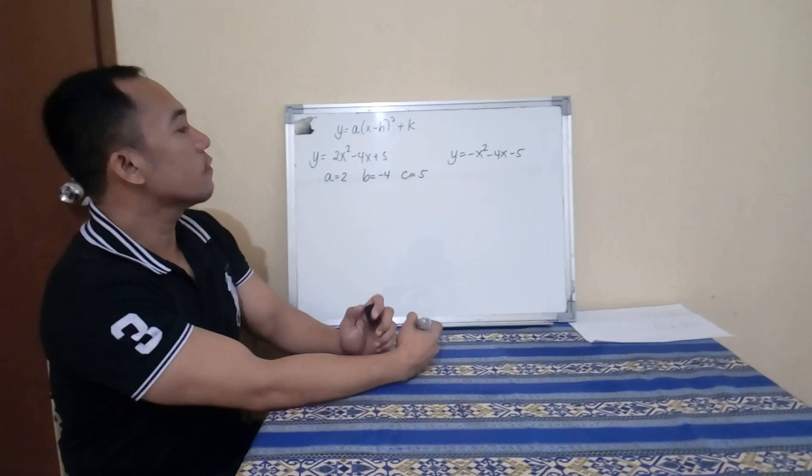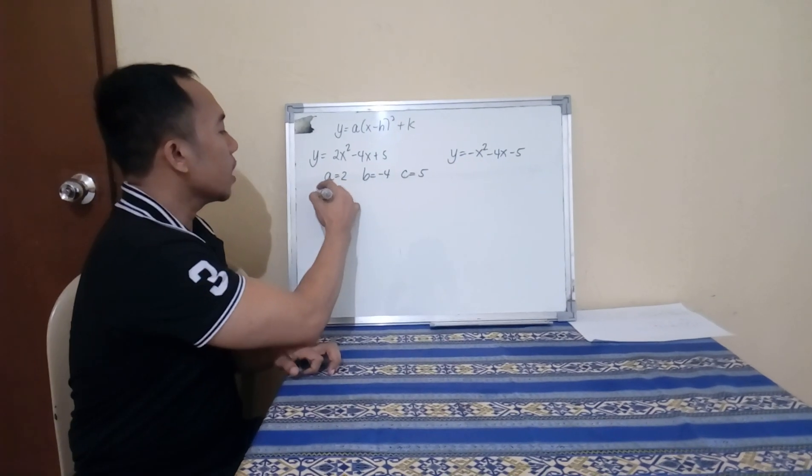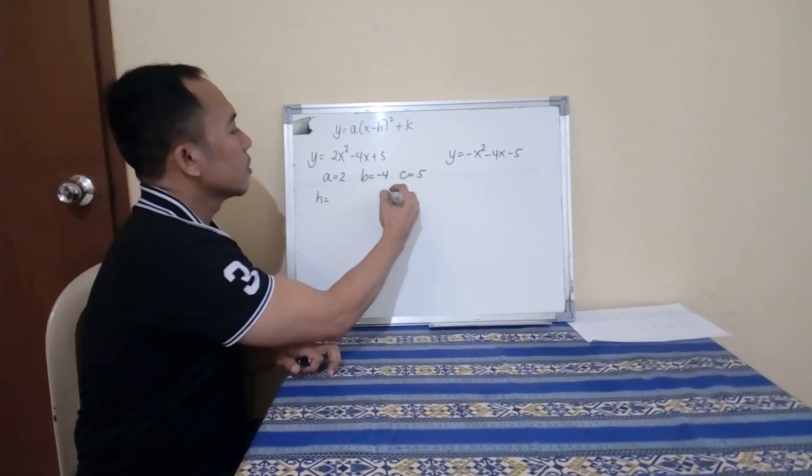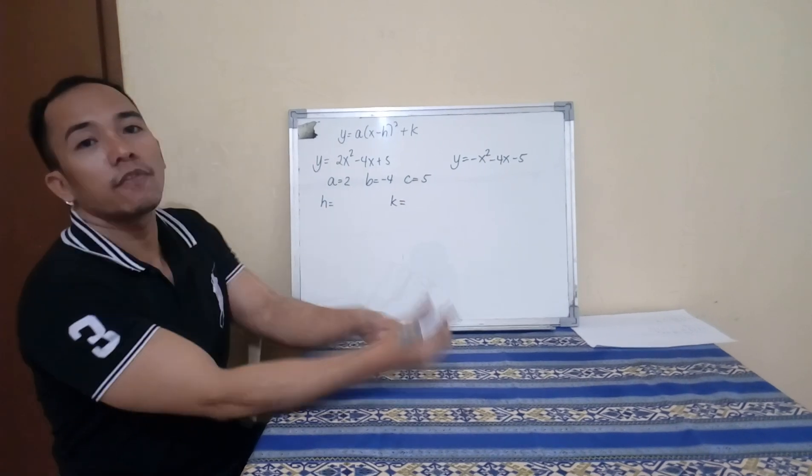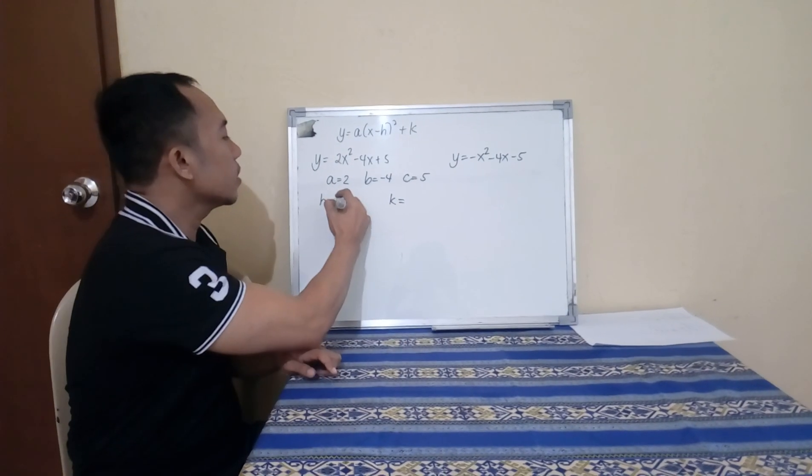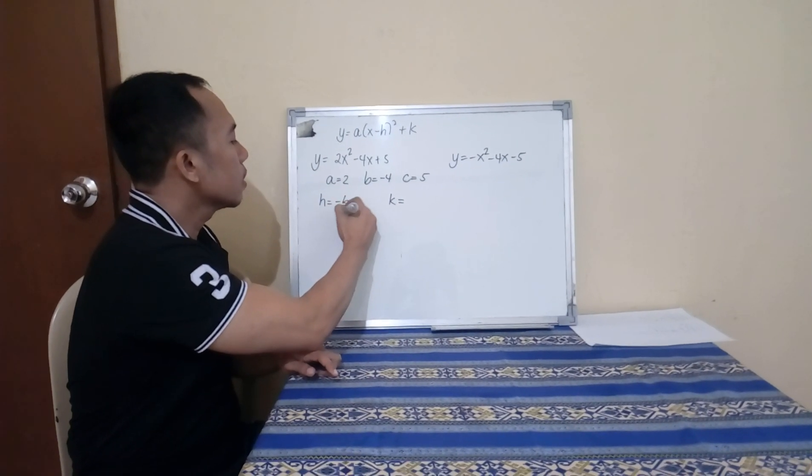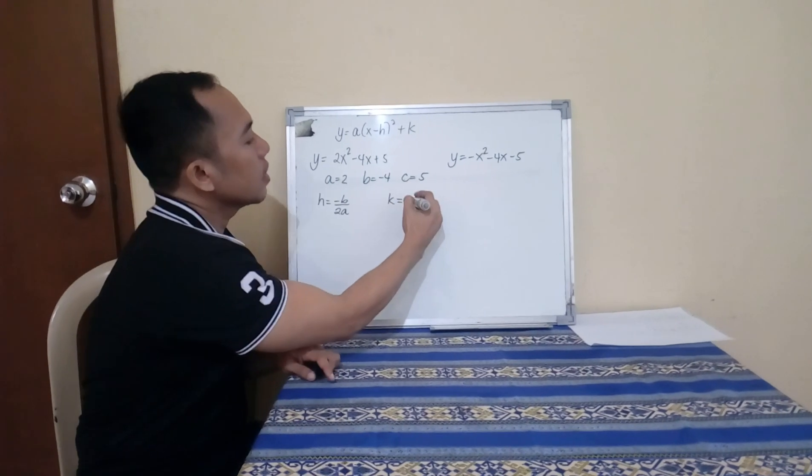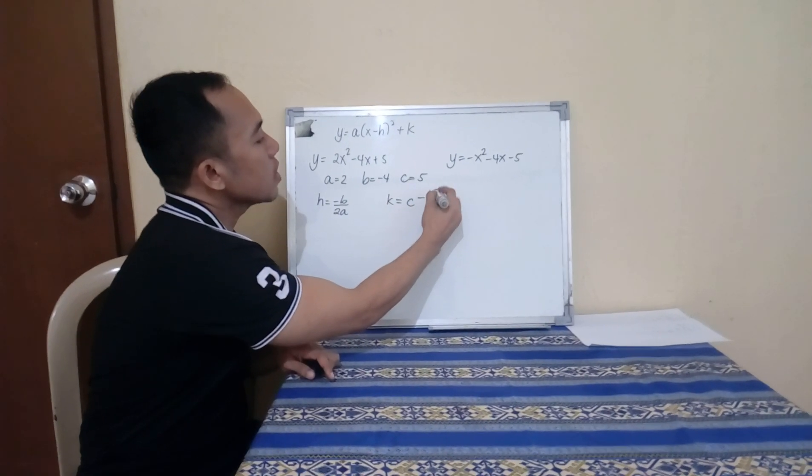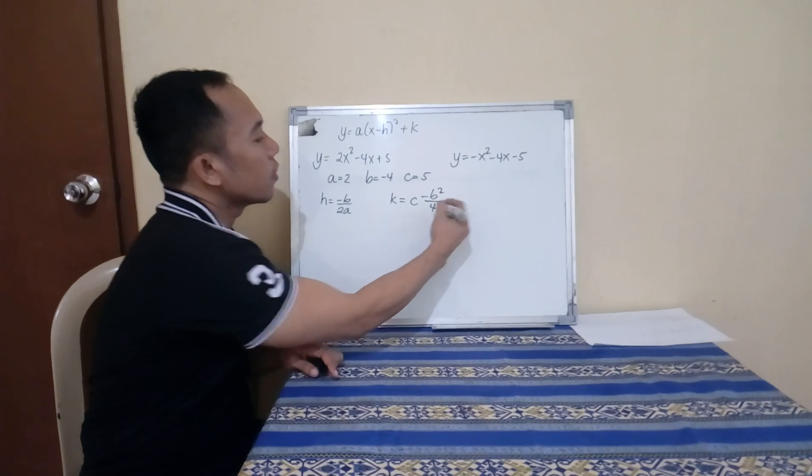We need to use the formula of H and K. Our formula for H is negative B over 2A, and for K is C minus B squared over 4A.